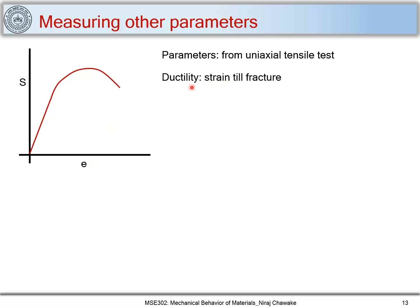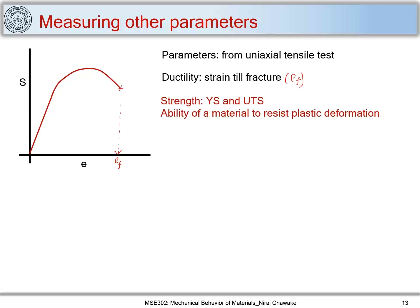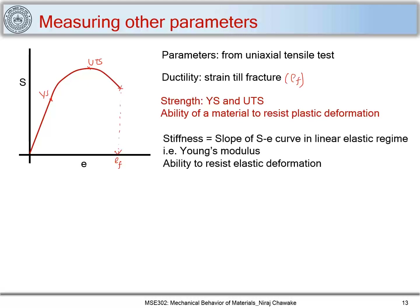Ductility is a strain till fracture. The material fractures at a point, and the strain corresponding to it is a measure of ductility — that is, strain to fracture. Similarly, strength — yield strength or UTS — is an ability of a material to resist plastic deformation. Yield strength is at one point and UTS is the maximum strength demonstrated by a material.